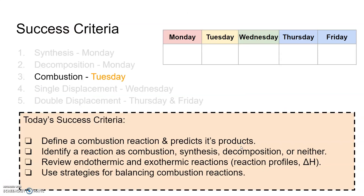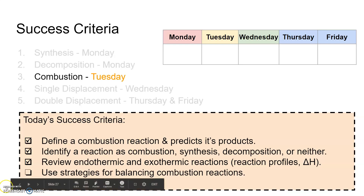So far today we've covered four success criteria: how to define a combustion reaction and predict its products (CO2 and H2O), how to identify a combustion reaction versus synthesis, decomposition, or neither, and we also reviewed endothermic and exothermic reactions. In our next video, we're going to cover strategies for balancing combustion reactions. Have a quality day.